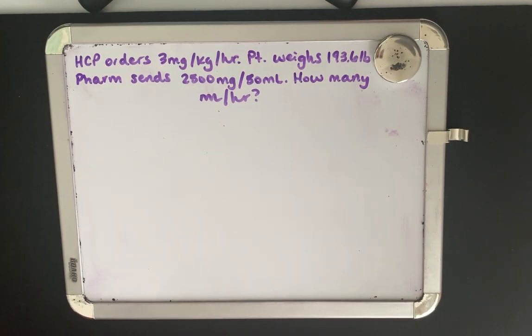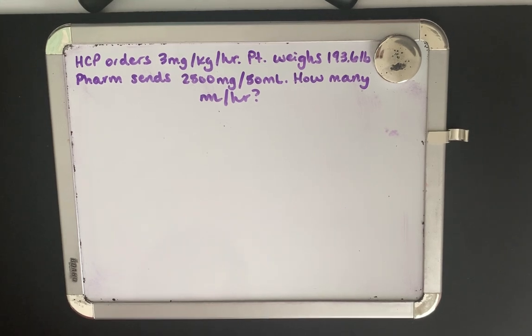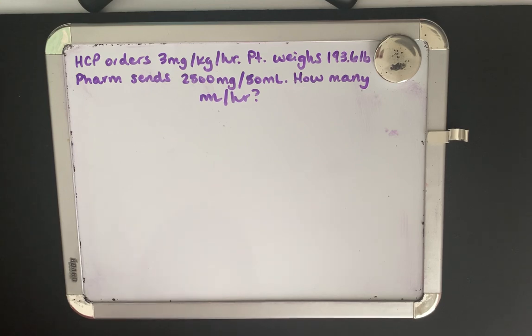So our healthcare provider ordered phenobarbital to be administered at three milligrams per kilogram per hour. The patient weighs 193.6 pounds. The pharmacy sends a bag that's labeled 2,500 milligrams in 50 mLs. And how many mLs per hour are we going to set the pump? That's what our goal is.